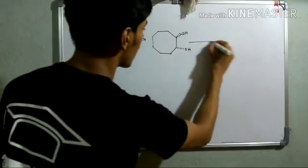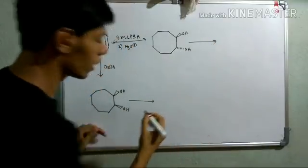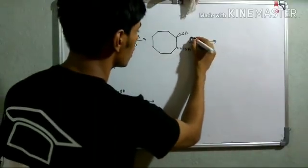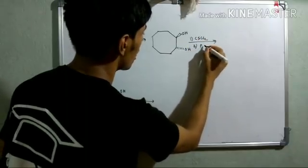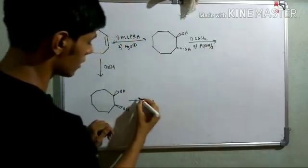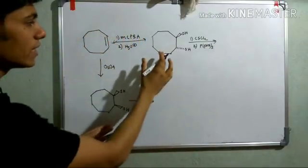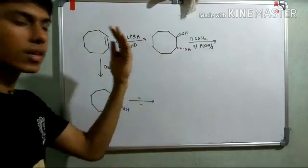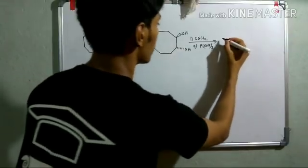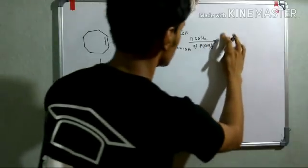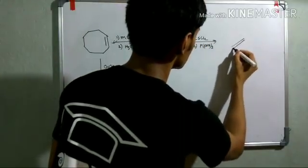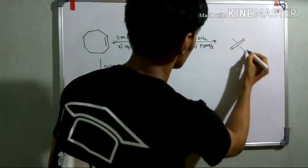Now, both of these compounds are reacted with the Corey-Winter olefination condition. So, the first step is CSCl2 and second step is P(OMe)3 and the same reagent is here. Now, in this case, as you are starting with the trans-diol, you will get your trans-olefin. So, in this case, the olefin is basically this one. You can see, this is your trans-olefin which you will get.